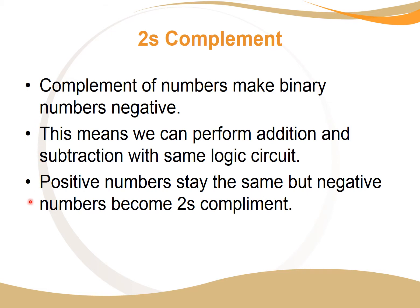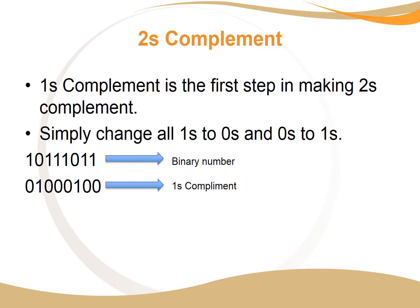Positive numbers stay the same, but negative numbers are put into ones or twos complement. Ones complement is very simple — we turn all the ones into zeros and all the zeros into ones. Here's an example: see all the ones become zeros and all the zeros become ones. We do this for every single bit, changing nothing else.